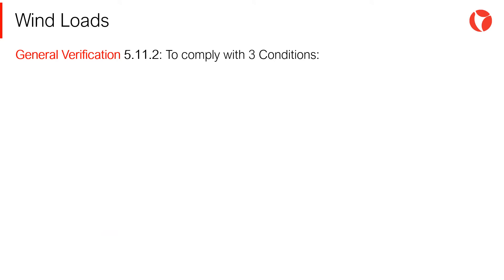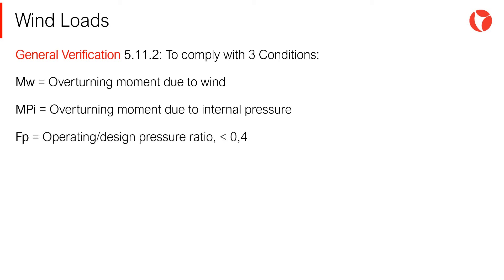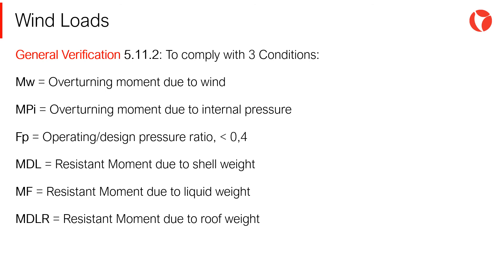The terms of these three conditions mentioned earlier are the following: Mw is the overturning moment due to wind. Mpi is the overturning moment due to internal pressure. Fp is the operating design pressure ratio, has to be less than 0.4. Mdl is the resistant moment due to shell weight. Mf is the resistant moment due to liquid weight. Mw is the overturning moment due to horizontal wind.